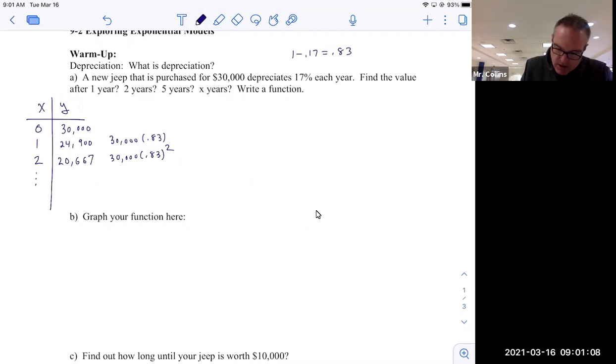And then this continues for five years, that was in the warmup. It would be of course 30,000, 0.83 to the fifth. So now all of a sudden, you're down to almost about a third of what you started, right? 11,817.